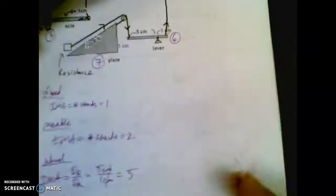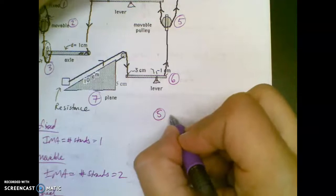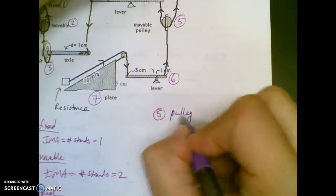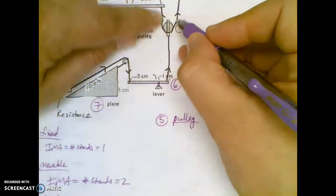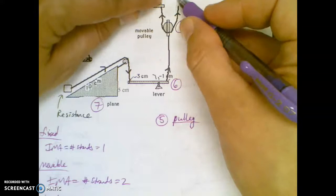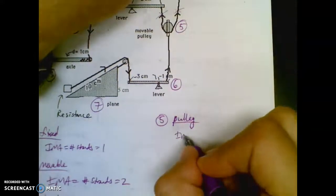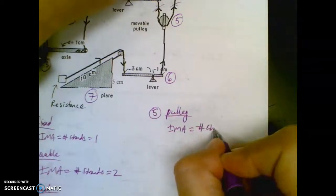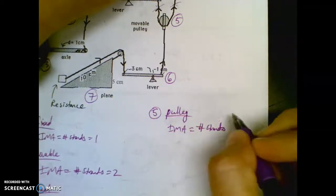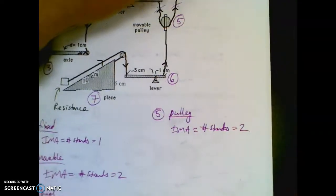Okay, moving on. Object five. See how I'm labeling everything? This is a pulley, movable. Since both strings are being pulled up, you're going to pull up on this one, you're going to pull up on this one, then you do count them both. So IMA equals hashtag strands. Since you're both pulling up or it's a movable pulley, you do count both strings.